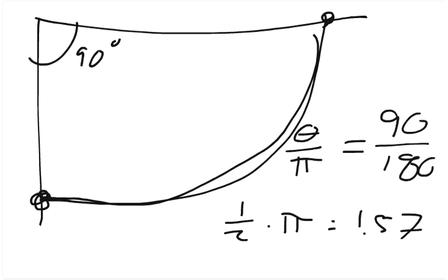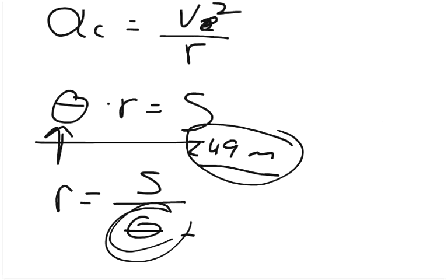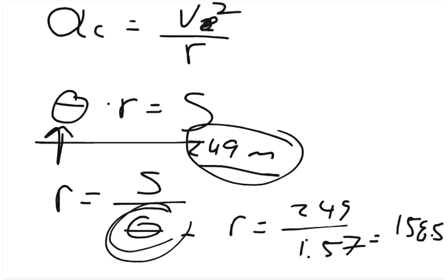So 1.57 is our angular displacement, 1.57 radians. So we come back here, and we can say that the radius equals 249 over 1.57. And so you plug that in, and you get approximately, the radius is approximately 158.52 meters. So then we come back up here, the velocity over the radius, so we just said the radius was 158.52 meters.